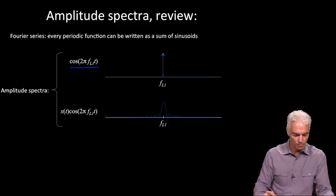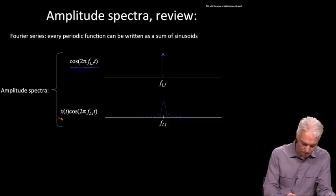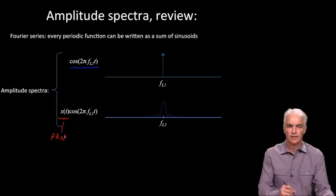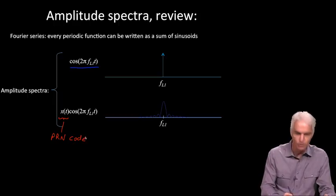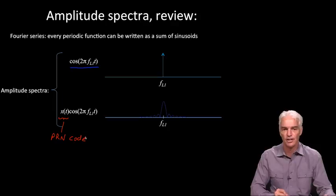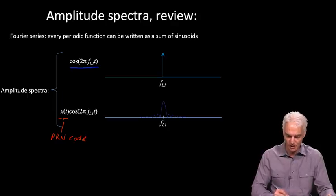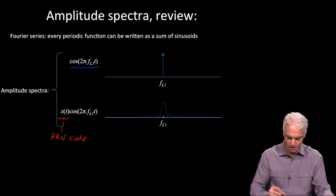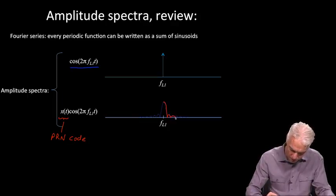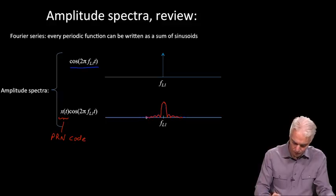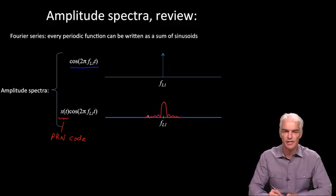Suppose we modulate that carrier wave as we do with the PRN code X of T, which you'll remember from module 4. That's the PRN code, which is changing sign from plus one to minus one and changing the signal. What we get is our famous sinc function, which you've seen a couple of times before in the class. That's what the amplitude spectra will look like for the GPS CA code.